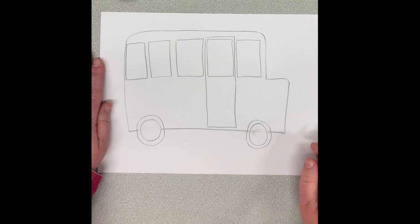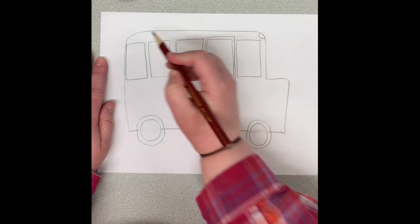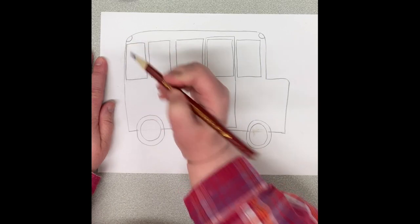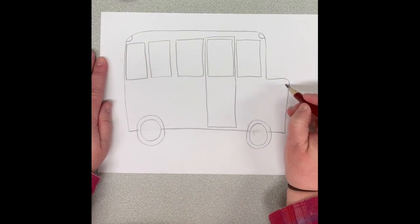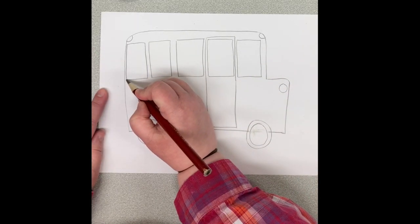Next we want to add some lights, so we're going to do little half circles in the corners at the top. We're going to add a headlight and a tail light.